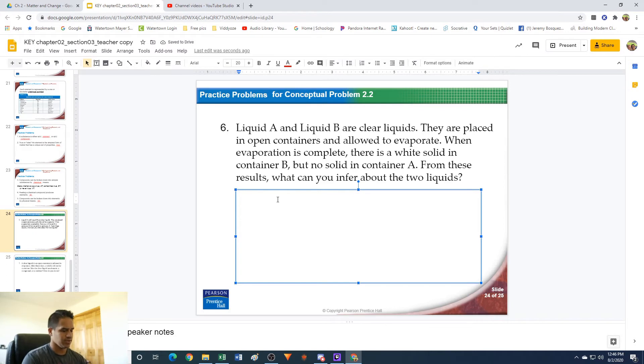Let's think about this. We have liquid A and liquid B. Both are colorless liquids. They both evaporate. So after evaporation—the stuff before was from before, so let's go before. Afterwards, liquid A has nothing left, and liquid B has a white solid.